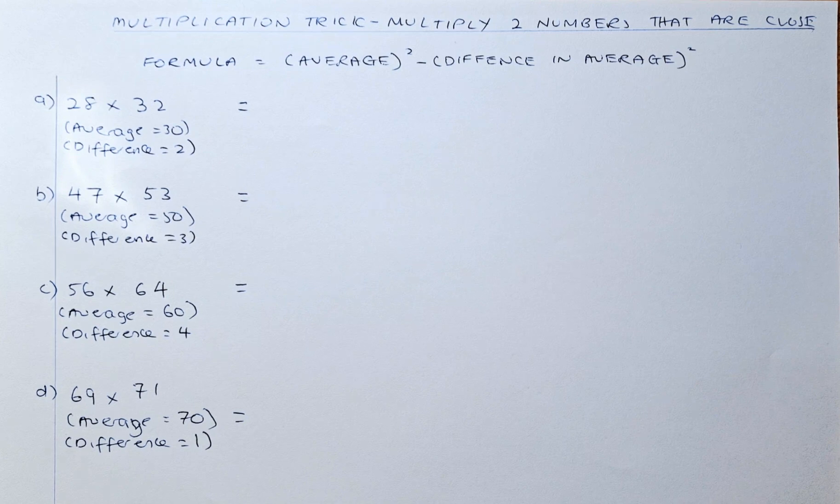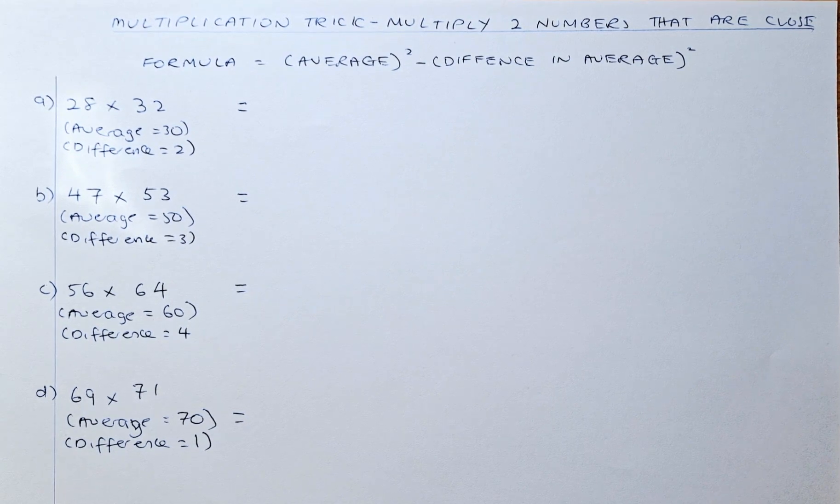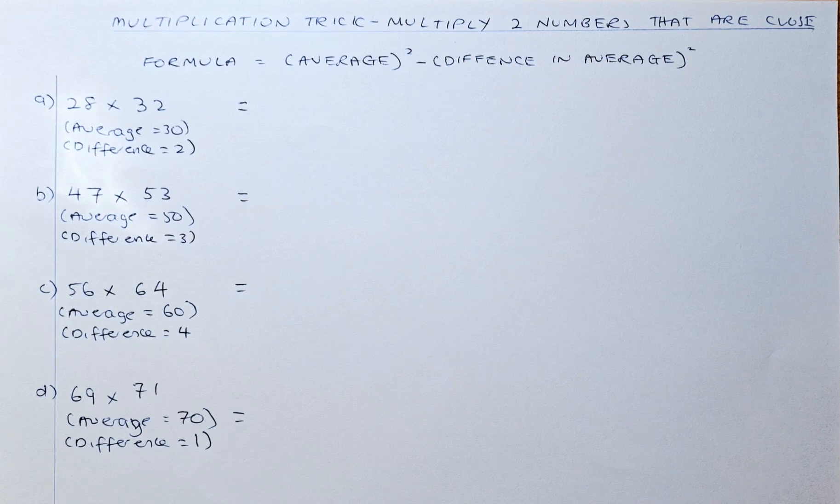The formula to calculate this is the average squared minus the difference in the average squared. So for example,